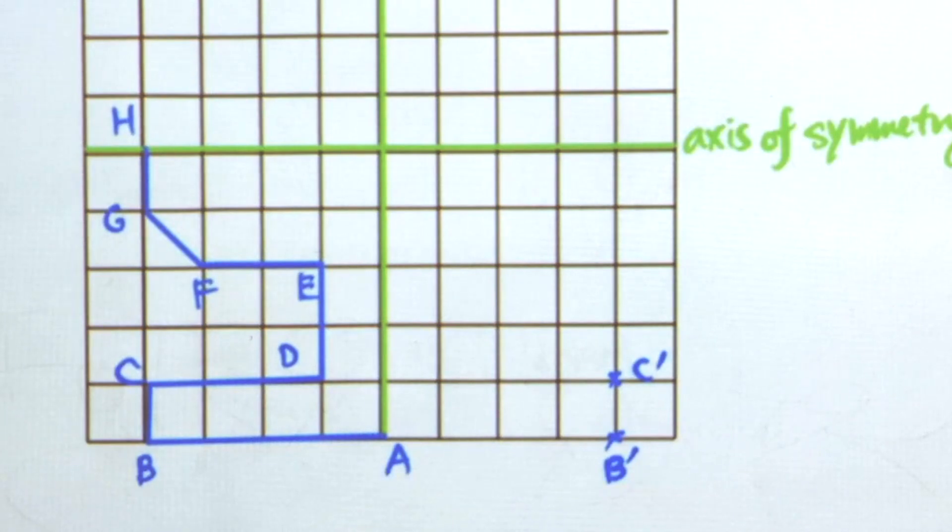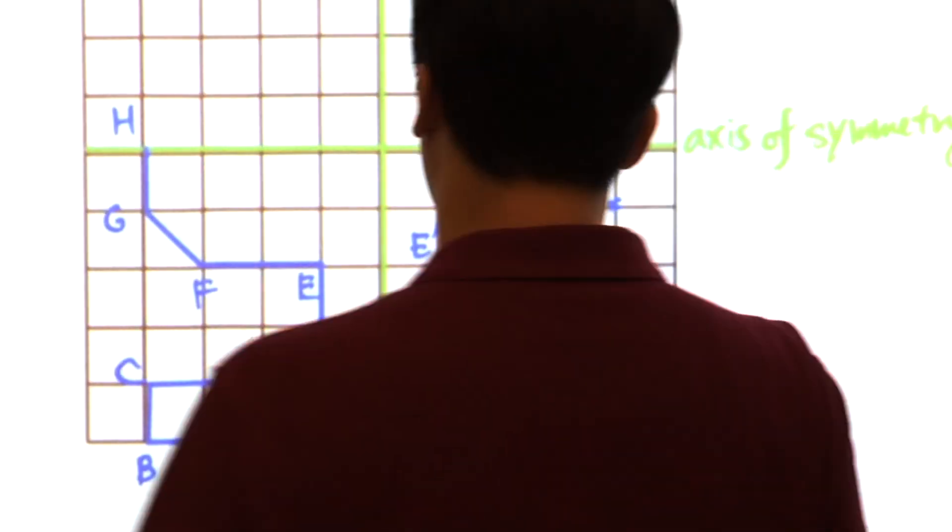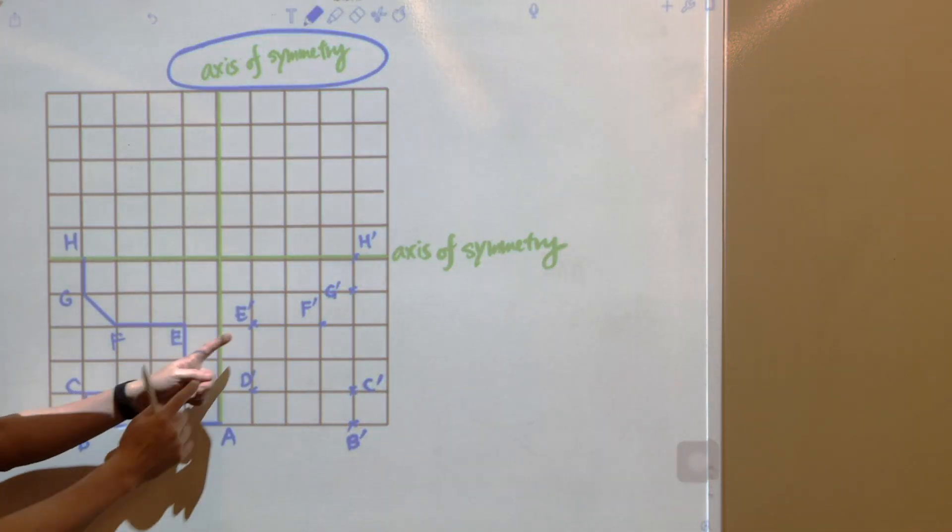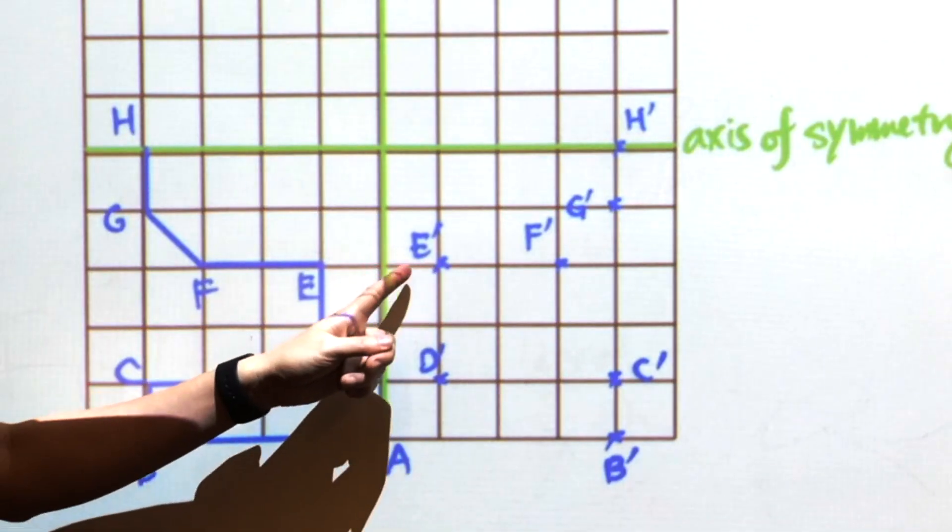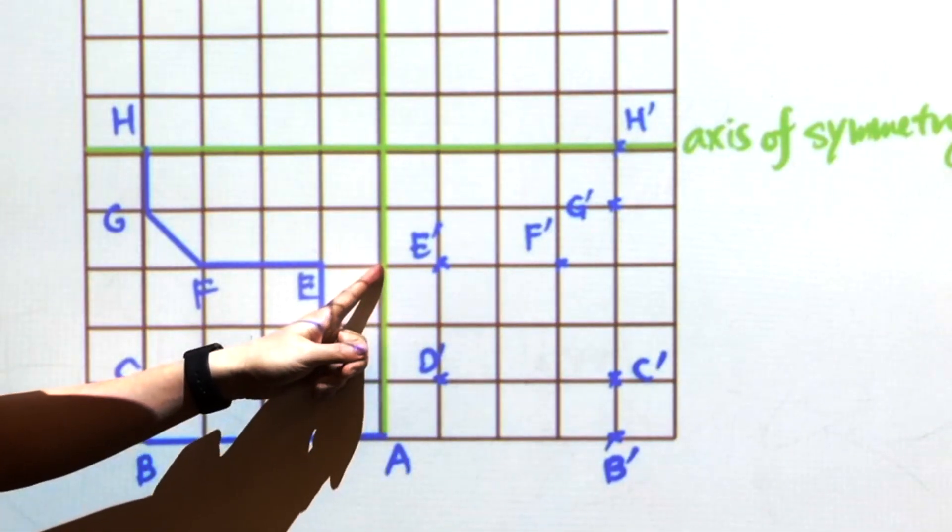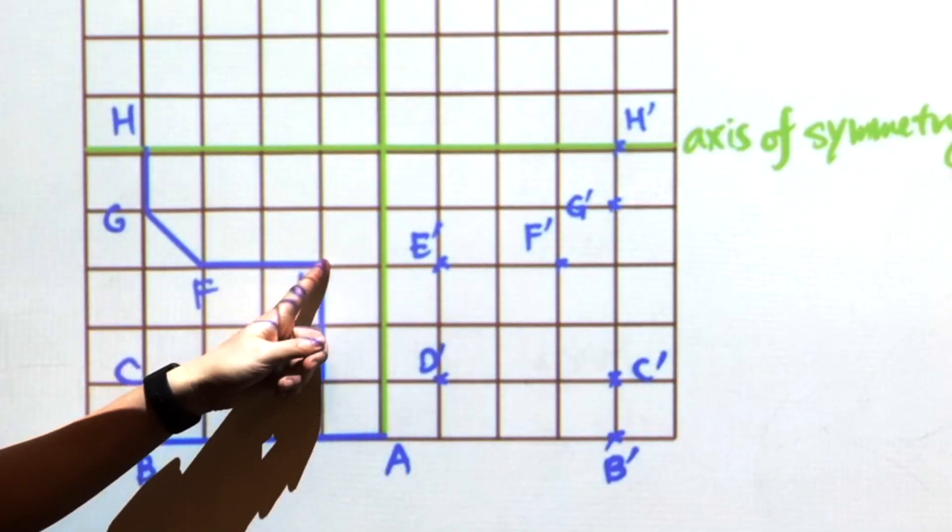And then D, E, F, G, finally H. So the main point is, every image has the same distance from the mirror as its object.